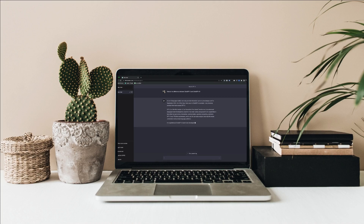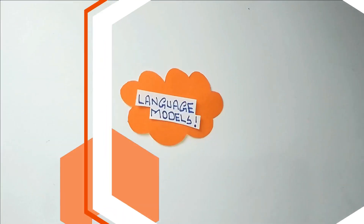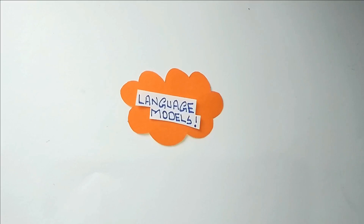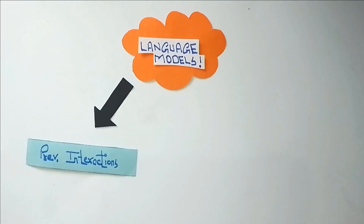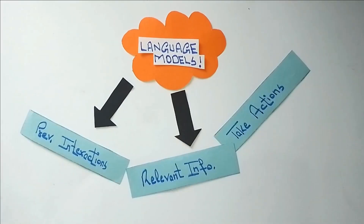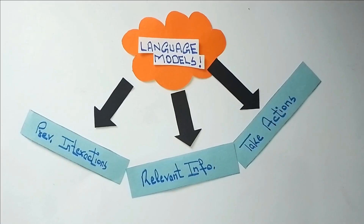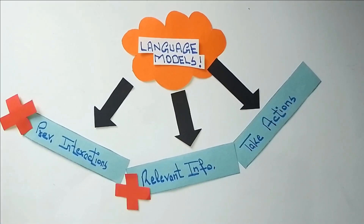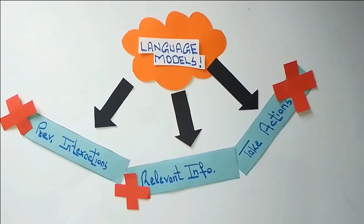Language models are very powerful and versatile but they also have some limitations. For example, they may not have access to all the relevant information for a given task such as documents in your drive. They may not be able to take actions based on their output, or they may not be able to remember previous interactions.